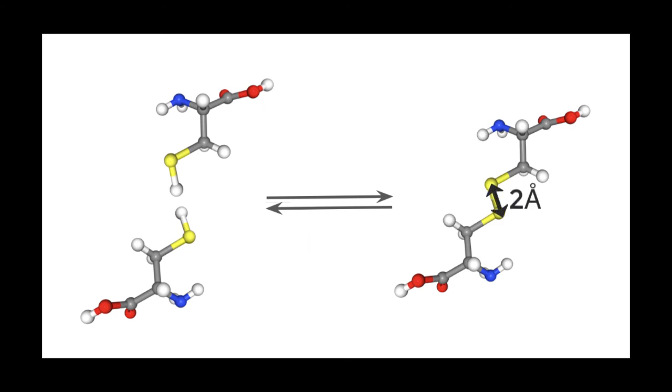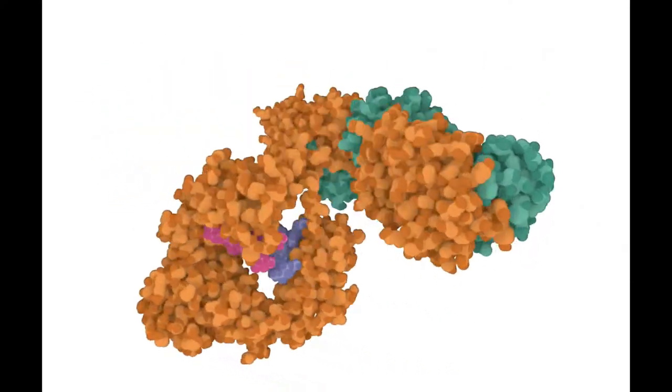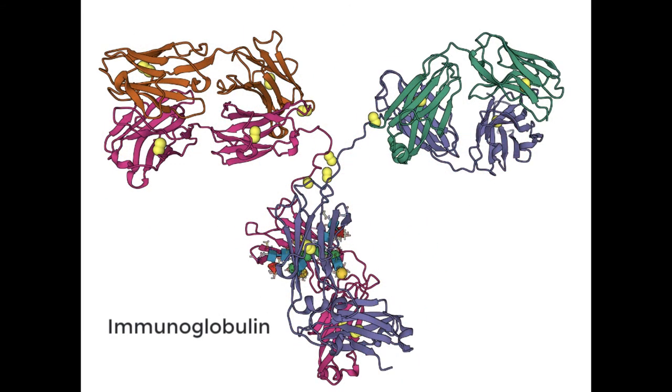The distance between the two bonded sulfur atoms is around two angstroms. Disulfide bonds play crucial roles in providing stability and holding together large flexible proteins like immunoglobulins or antibodies.